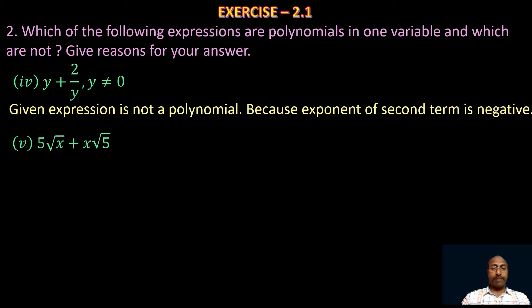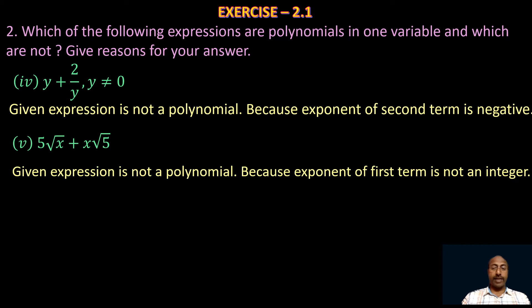Take the fifth one: 5√x + x√5. It also seems like a polynomial in one variable, but in the first term 5√x can be written as 5·x^(1/2), and the power 1/2 is not an integer — it is a rational number. Since the exponent of x is not an integer, the given expression is not a polynomial.